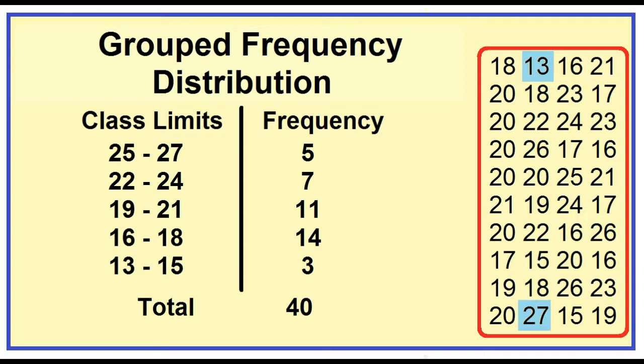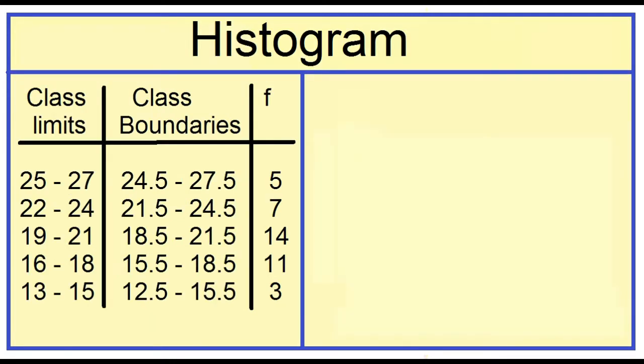To make a histogram, we need the class boundaries and the frequency. Let's add a column for the class boundaries. If the data values are whole numbers, we can easily find the class boundaries by subtracting 0.5 from the lower class limits and adding 0.5 to the upper class limits.